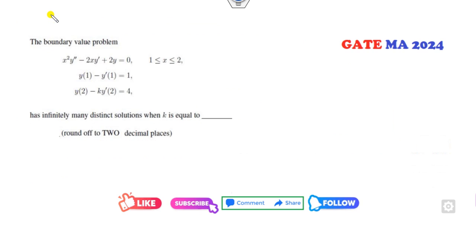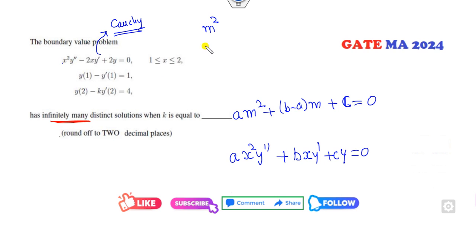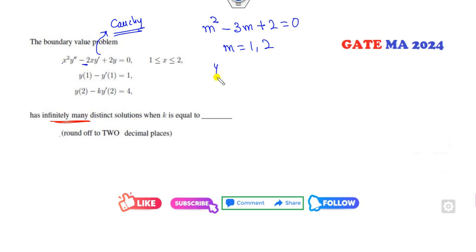Next: a boundary value problem with infinitely many solutions — this is a Cauchy-Euler problem. Whenever you have the Cauchy-Euler form: ax²y'' + bxy' + cy = 0, the auxiliary equation is: a·m(m-1) + b·m + c = 0, which simplifies to m² + (b/a - 1)m + c/a = 0. Here a=1, b=-2, giving m² - 3m + 2 = 0, so m = 1 and m = 2. The solution is c1·x + c2·x².